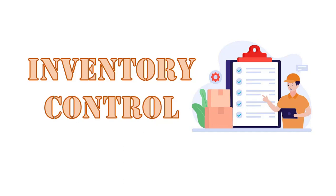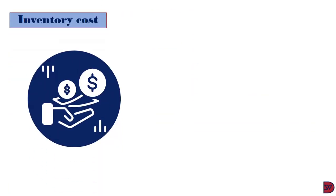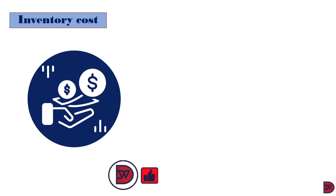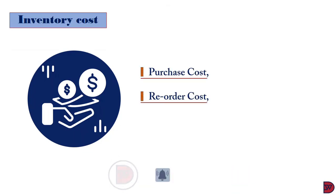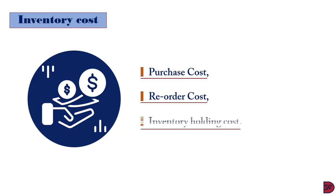The business therefore needs to identify and opt for the best. Now there are three costs a business will incur in its inventory ordering and receiving process. These are the purchase cost, the ordering or re-ordering cost, and lastly, the inventory holding cost.